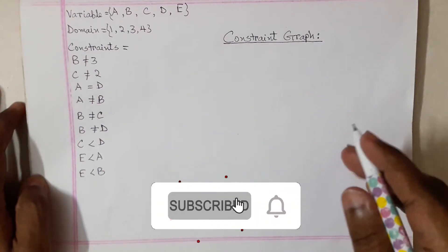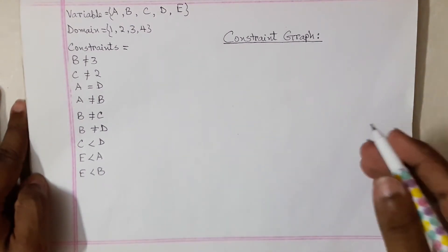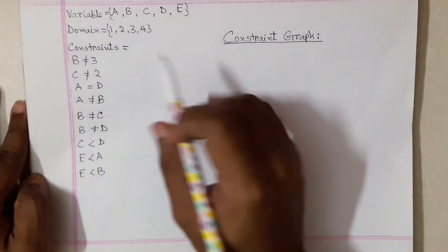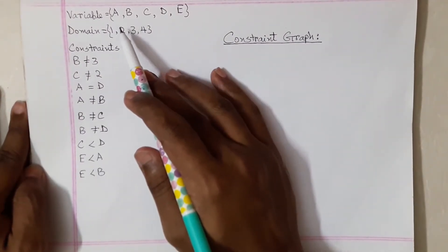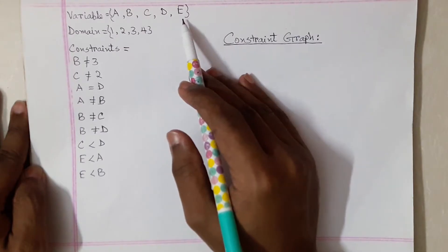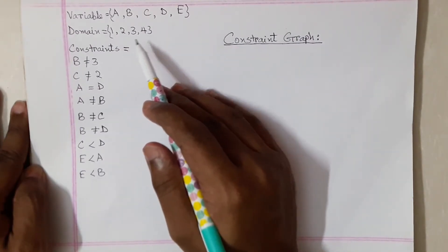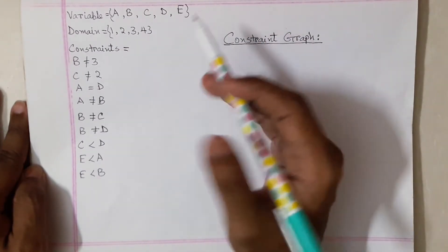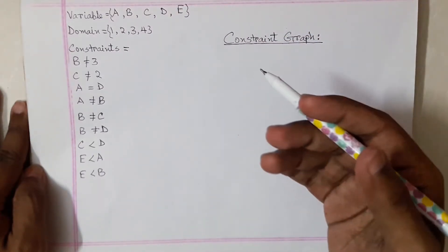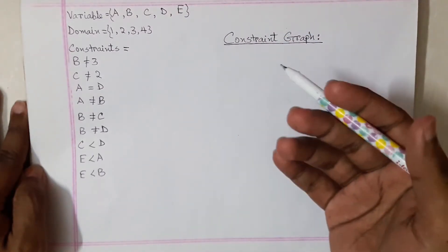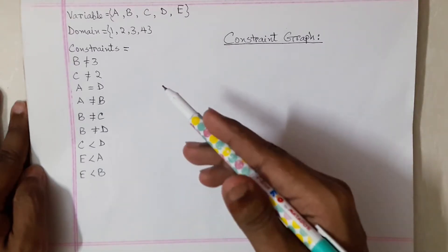A really easy way to make a constraint graph is like this. You have a set of variables — a, b, c, d, and e — and they have the domains one, two, three, and four. Let's say a, b, c, and d are the names of people, and one, two, three, and four are the timings they have in their schedule.